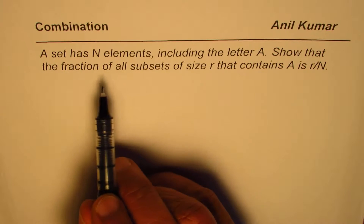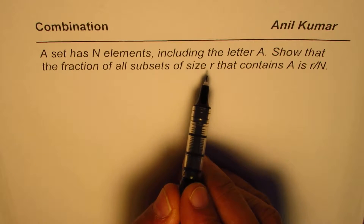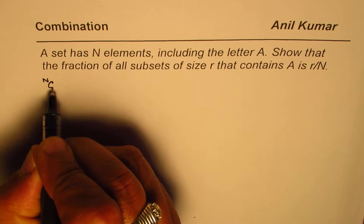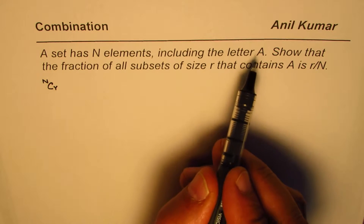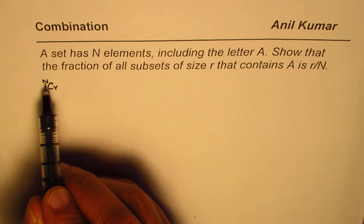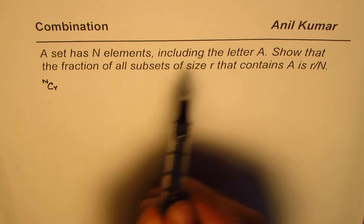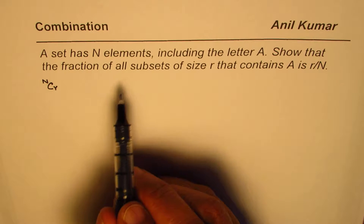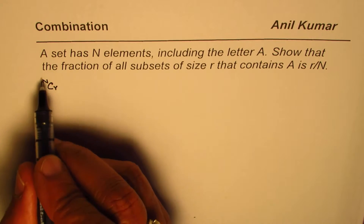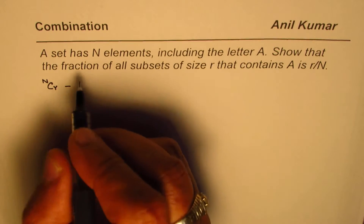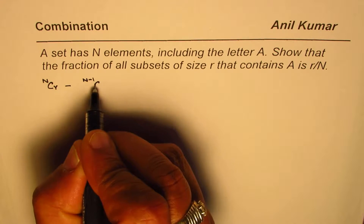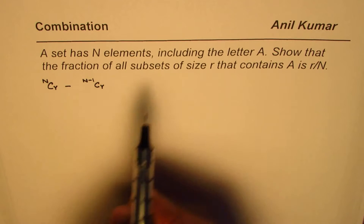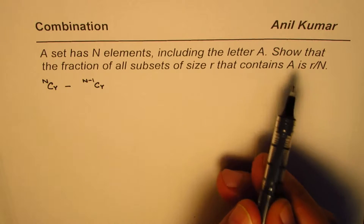As you know, when we're talking about subsets of size R from N elements, that is NCR. In our case we have a letter A included in these N elements. Now if we don't include A, we'll have one less element. So to find the subsets which include A, we can say NCR minus — when we take away A we have one less element — so it is (N-1)CR. That is how we calculate the subsets of size R which contain A.